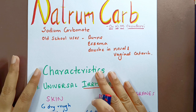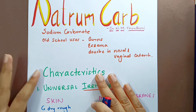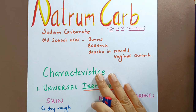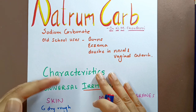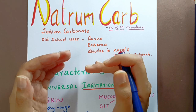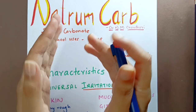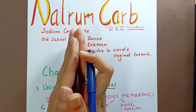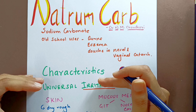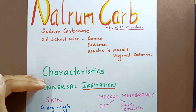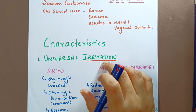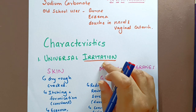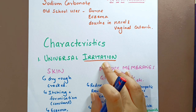Dr. N.M. Chaudhary talks about the characteristics of this remedy. He always mentions them in a very ordered, point-wise manner so we can understand the gist and the very important points of the remedy at one place. The first characteristic is universal irritation.